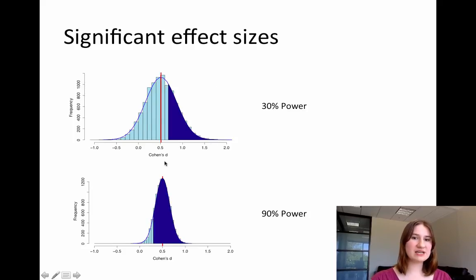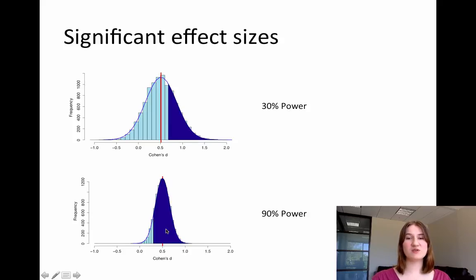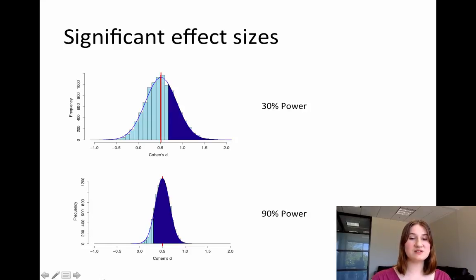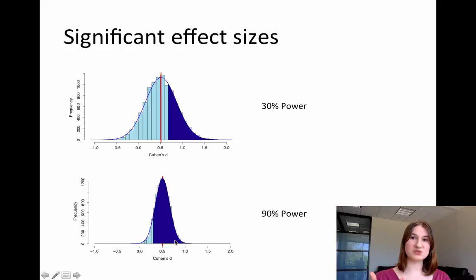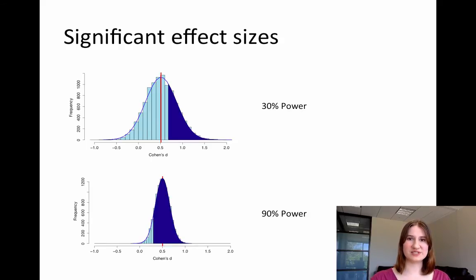At 90% power, a much larger proportion of this curve is shaded in, meaning many more effect sizes will come back as statistically significant. We still get effect sizes from the tail end of the curve, but many of the effect sizes are right around the midsection, so effect sizes close to the true effect size are going to reach statistical significance.